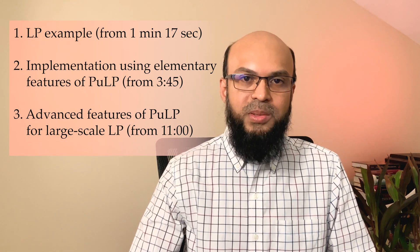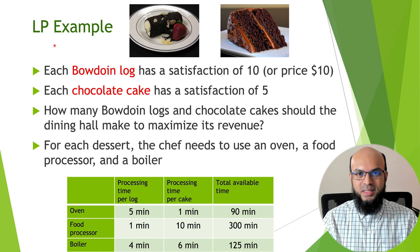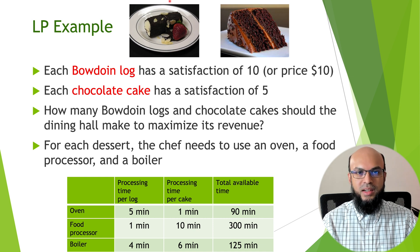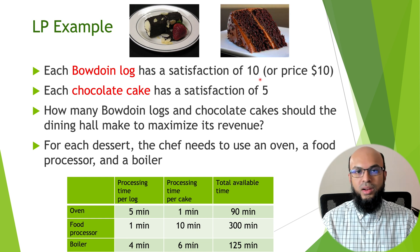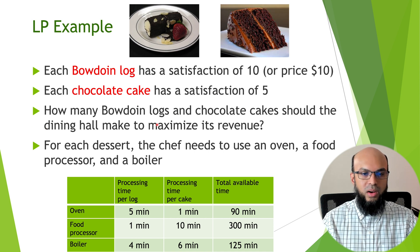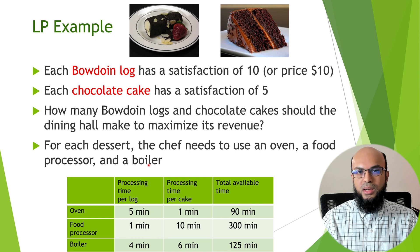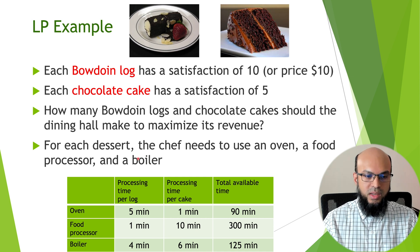Let's get started with an example. Our linear programming example is motivated by Bowdoin College's famous dining hall. We'll be thinking about two popular dessert items: the first is a Bowdoin log, and the second is a chocolate cake. Each Bowdoin log has a satisfaction level of 10 — equivalently, a price of $10. Each chocolate cake has a satisfaction level of five. The question is how many Bowdoin logs and chocolate cakes the dining hall should make to maximize revenue.